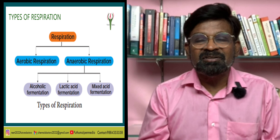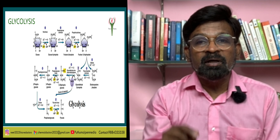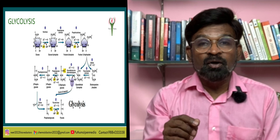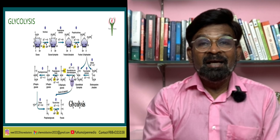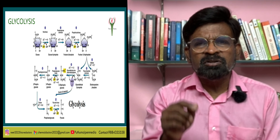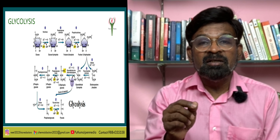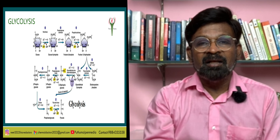The scheme of glycolysis was first introduced by Gustav Embden and is referred to as the EMP pathway. It is the common pathway in both aerobic and anaerobic modes of respiration, but in anaerobic organisms it is the only process of respiration. Glycolysis occurs in the cytoplasm of the cell.